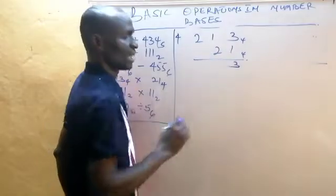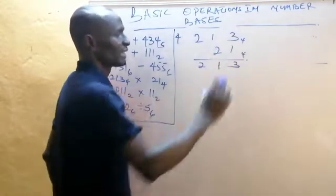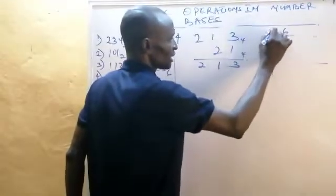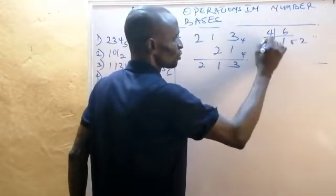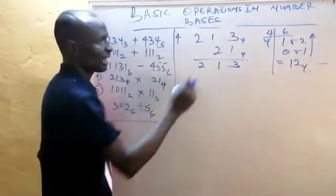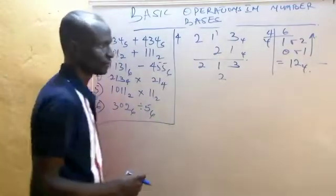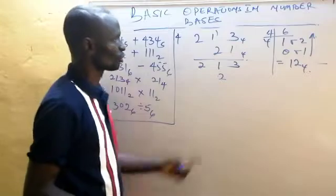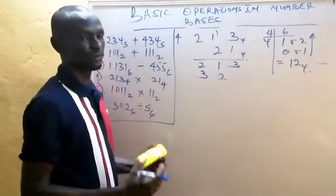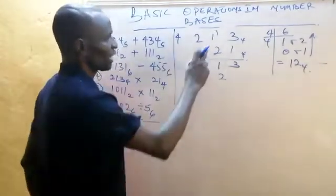Question four: 213 base four multiplied by 21 base four. One times three is three — three is less than four so we keep it. One times one is one. One times two is two. Now two times three is six. Six is higher than four, so converting six from base ten to base four: four into six is one remainder two — write two, carry one. Two times one is two, plus one carried is three. Two times two is four. Four in base four to base ten converts to 10 in base four — write zero, carry one.